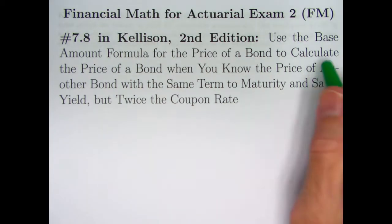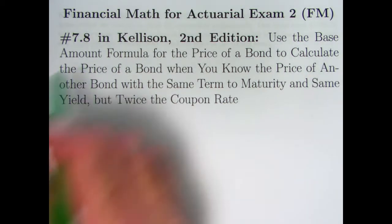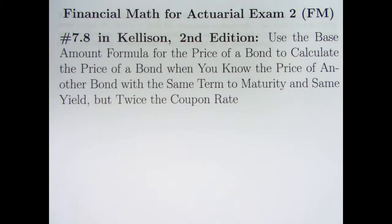In this video we're going to use the other formula called the base amount formula to solve problem 7.8 in Kellison's book. I meant to show you that book in the last video but forgot. Here it is, The Theory of Interest, second edition by Stephen Kellison.